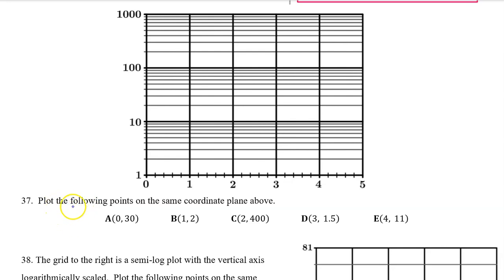Number 37, plot the following points on the same coordinate plane above. This is clearly a semi-log graph where the y-axis has been logarithmically scaled. When we plot the point A (0, 30), we're going to start here at 0. But 30 will take us past 10. And as you pass 10, you begin to count by tens. So this is 10, but then the next line is 20, and the next line is 30.